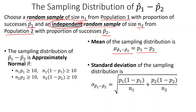To tell if the distribution is normal, we just check if each one of them is normal individually. So if N1 times P1 is greater than or equal to 10, and N1 times (1 minus P1) is greater than or equal to 10, and the same conditions hold for population 2, proportion 2, and sample size 2 — if both are normal, then the sampling distribution of the difference is also approximately normal.